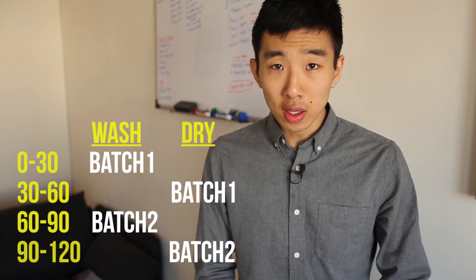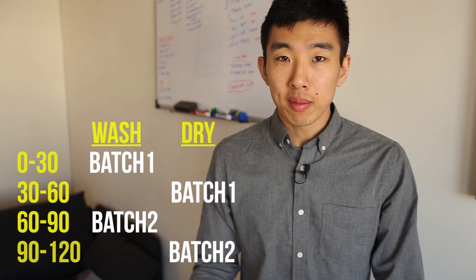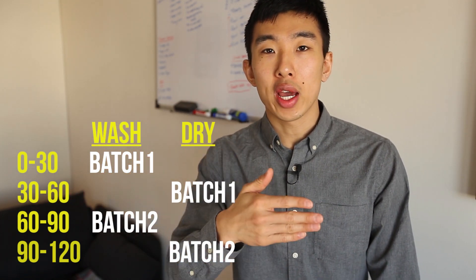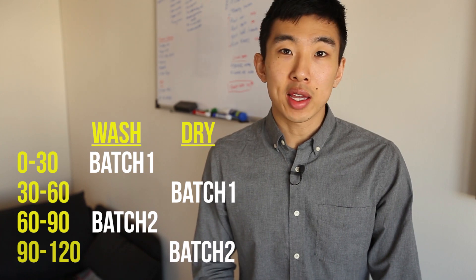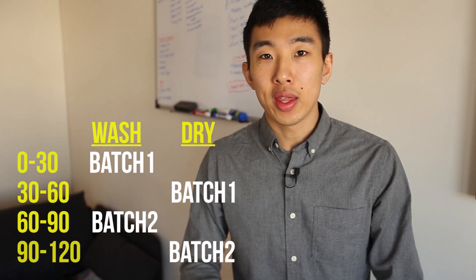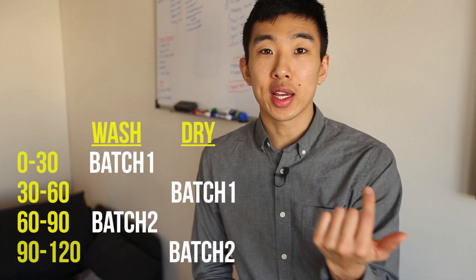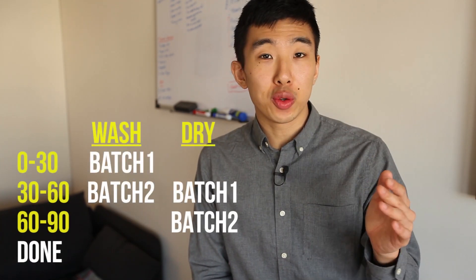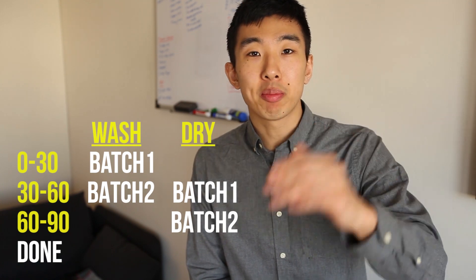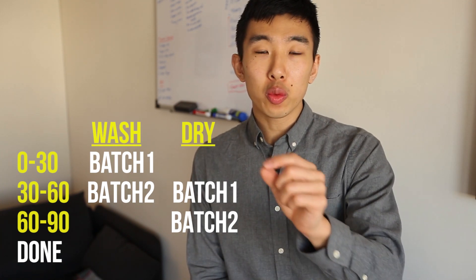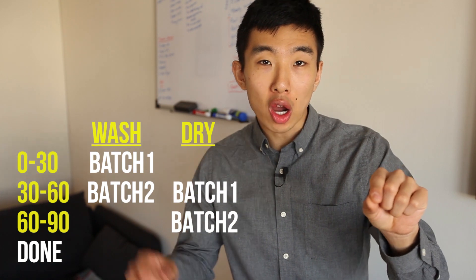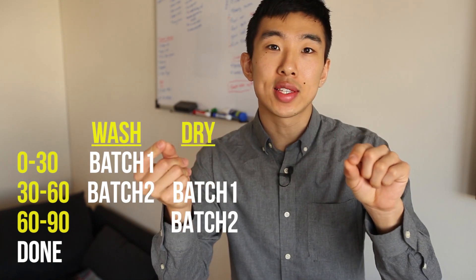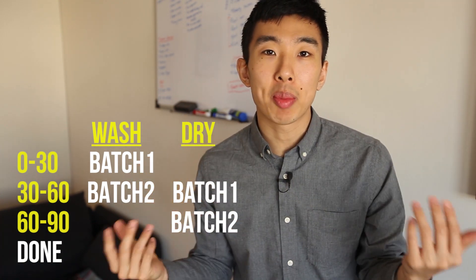Let's think about the most inefficient way to wash two batches of clothes. The inefficient way would be: take the first batch, wash it, dry it — then take the second batch, wash it, dry it — and that whole process would take 120 minutes, or two hours. The reason why we could do it in 90 minutes is because of pipelining. While we were drying the first set of clothes, we already started washing the second set. This is essentially what pipelining is.